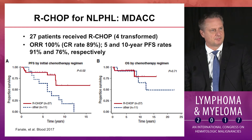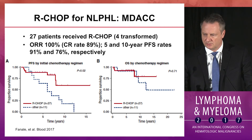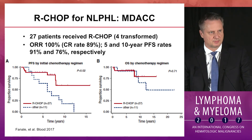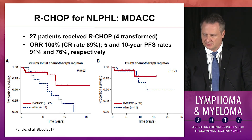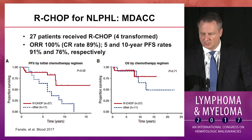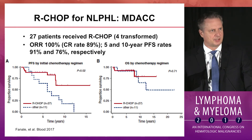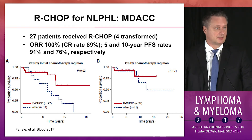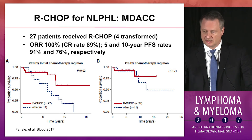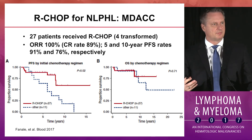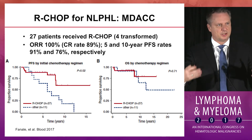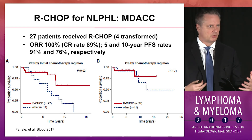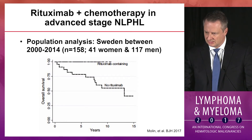More recently, Michelle Fanale at MD Anderson published R-CHOP data for NLPHL. Not a huge series — 27 patients using R-CHOP, with about 13 receiving ABVD or R-ABVD for comparison. That's a hard comparison given the numbers, but this data looks as good as anything else. Whether R-CHOP is better than ABVD or R-ABVD is hard to say, but there is a rationale for using R-CHOP given the proclivity to transform to diffuse large B-cell and the indolent-lymphoma-like behavior.